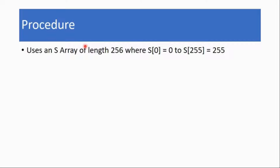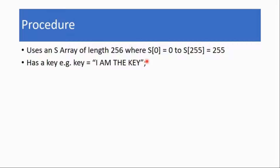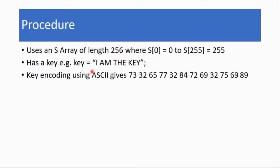The RC4 cipher uses an S-array of length 256 where S0 is equal to 0, S1 is equal to 1, S2 is equal to 2, all the way up to S255 which is also equal to 255. Next up we have a key. In this example our key is 'I am the key'. This key first has to be encoded. In this case we're using the ASCII encoding — American Standard Code for Information Interchange. So this gives us 73, 32, and so on. Uppercase A is equal to 65, B is 66, C is 67, and lowercase A is 97. The spaces are encoded as 32.